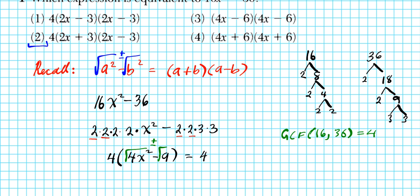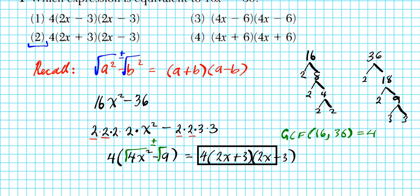We carry over the 4, and then we have (2x + 3)(2x - 3). As indicated earlier, the answer to question 1 is option number 2.